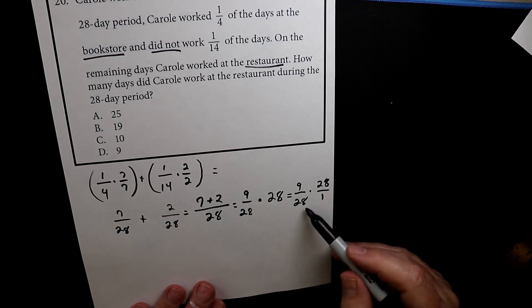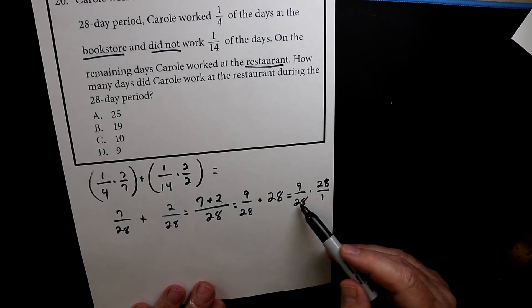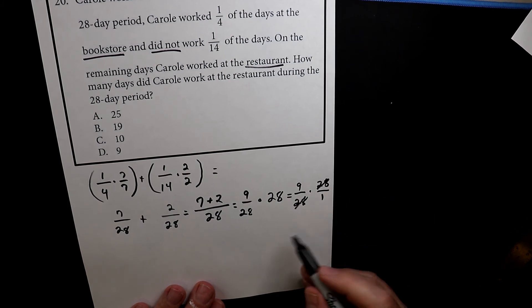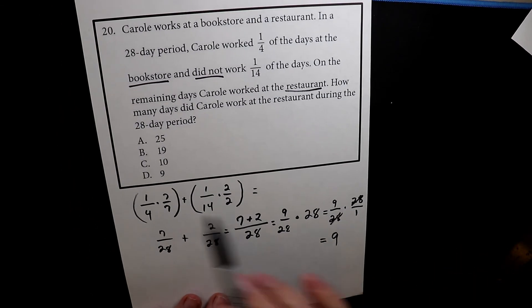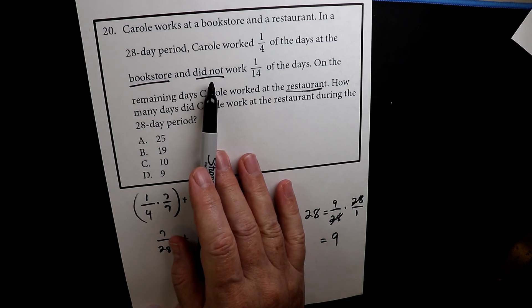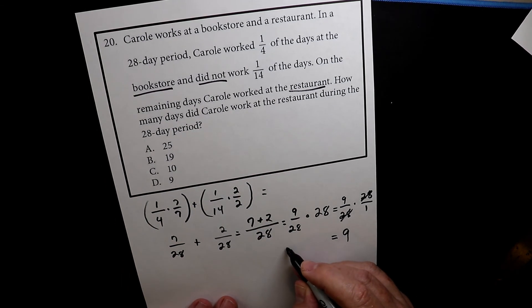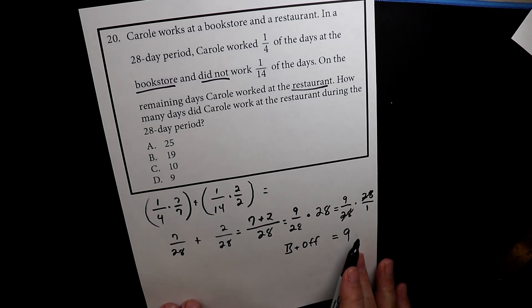Because 28 over one is the same thing as 28. And when you're multiplying fractions, if you have the same number on the top, and you have the same number on the bottom, you can simplify that to one. So this is the same thing as nine days that she worked at either the bookstore or had off. So nine days, she was at those two. So I'll put bookstore plus off equals nine days.